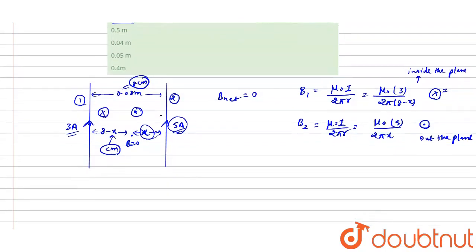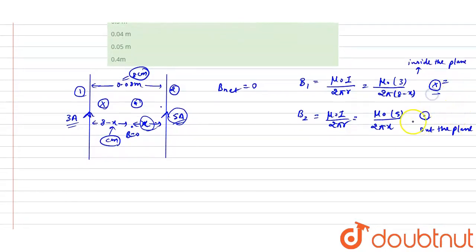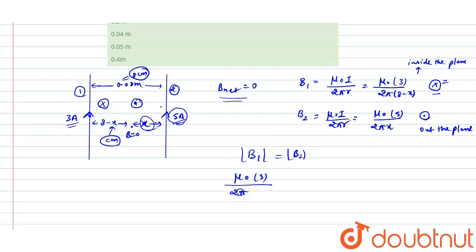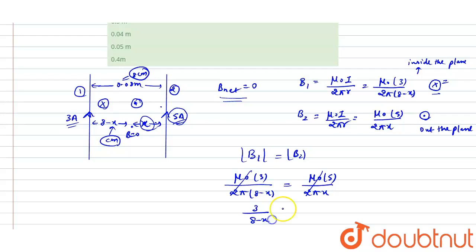Since B1 and B2 are in opposite directions, the net magnetic field B_net will be zero only when the magnitude of B1 equals the magnitude of B2. So we set: μ₀ × 3 / (2π(8 − x)) = μ₀ × 5 / (2πx). The common factor μ₀ / 2π cancels from both sides, giving us 3 / (8 − x) = 5 / x.